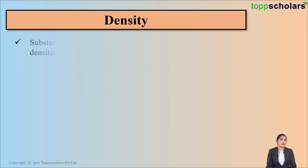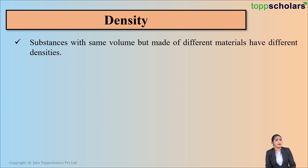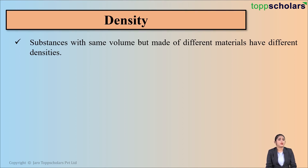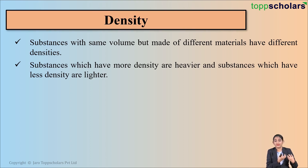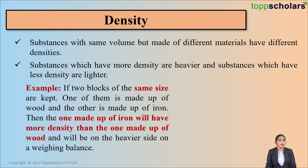The next property is density. Substances with the same volume but made of different materials are said to have different densities. It is not necessary that substances made of different materials having the same volume will have the same density — one may be more dense while the other may be lighter. Substances with more density are heavier, whereas substances with less density are lighter.